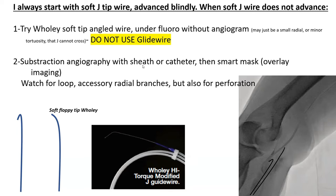Do not use glide wire. At the level of the radial and brachial arteries, you have a lot of small branches, and glide wire would go into those branches and would perforate without giving you any tactile feedback. Absolutely do not use a glide wire at the level of the arm and the forearm.